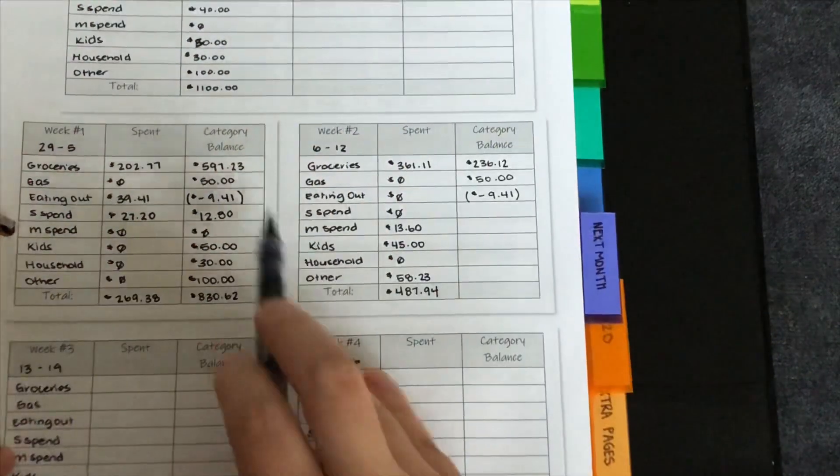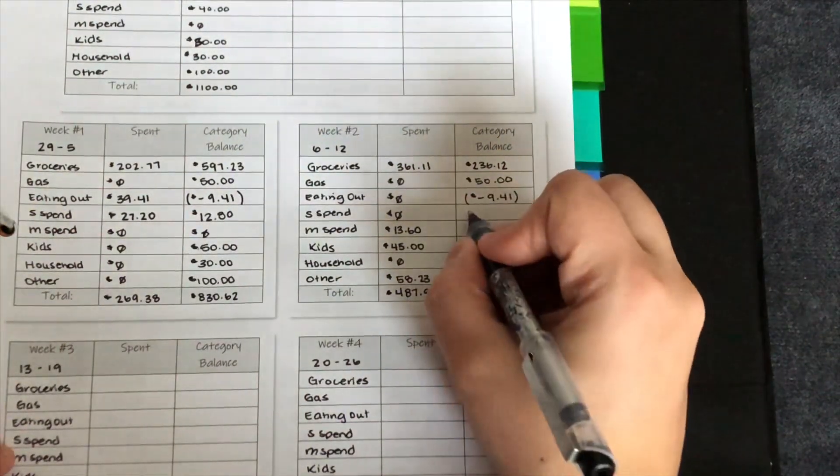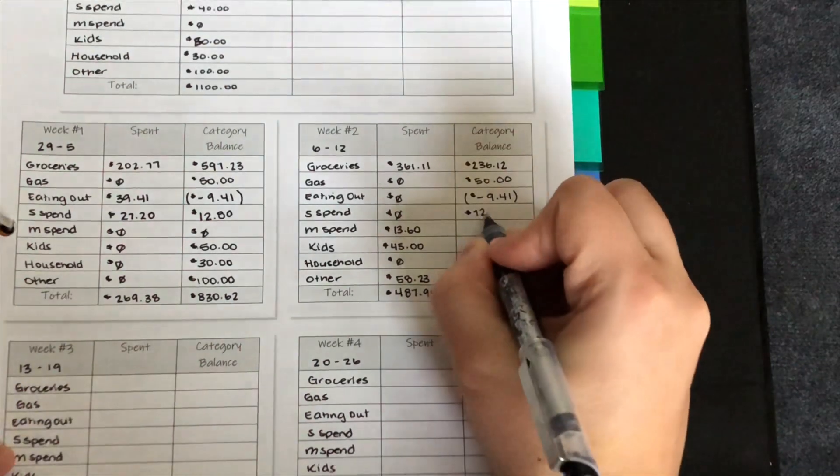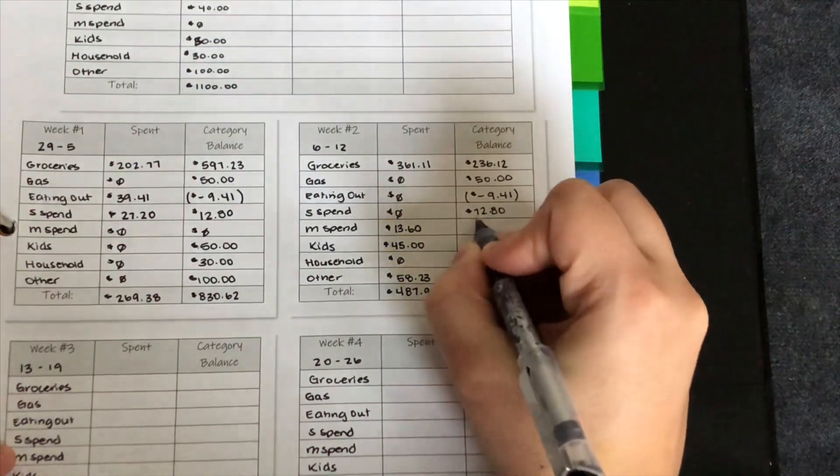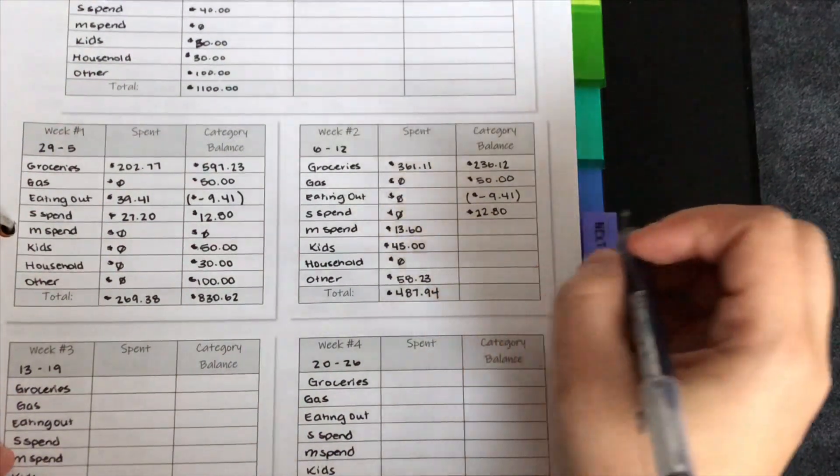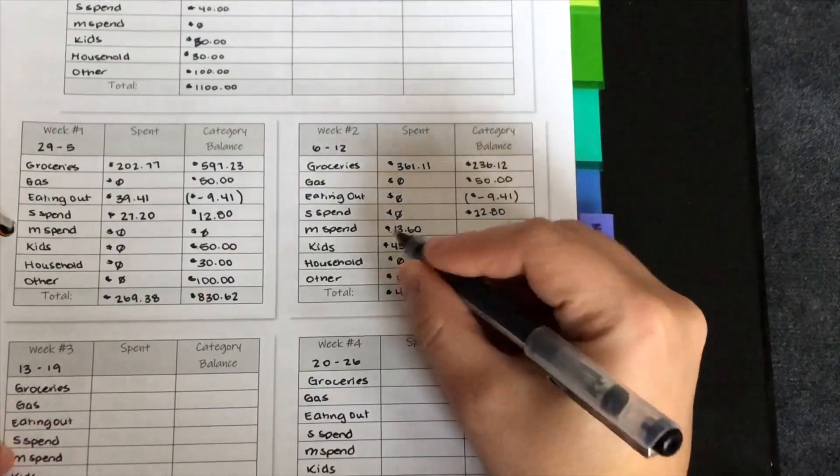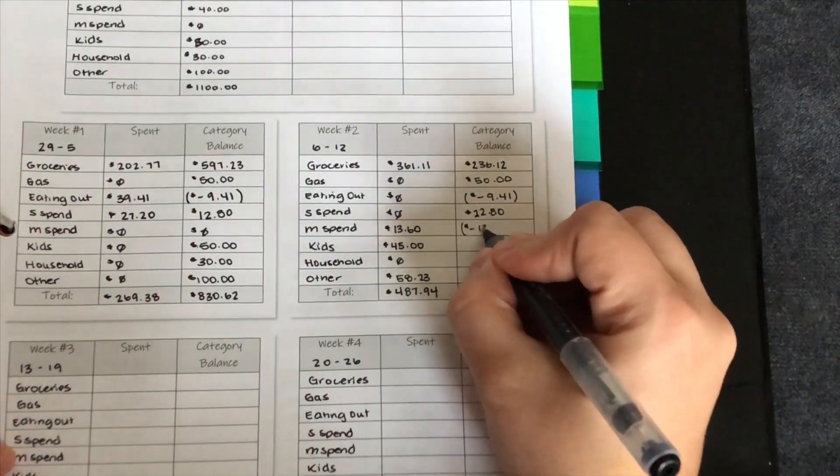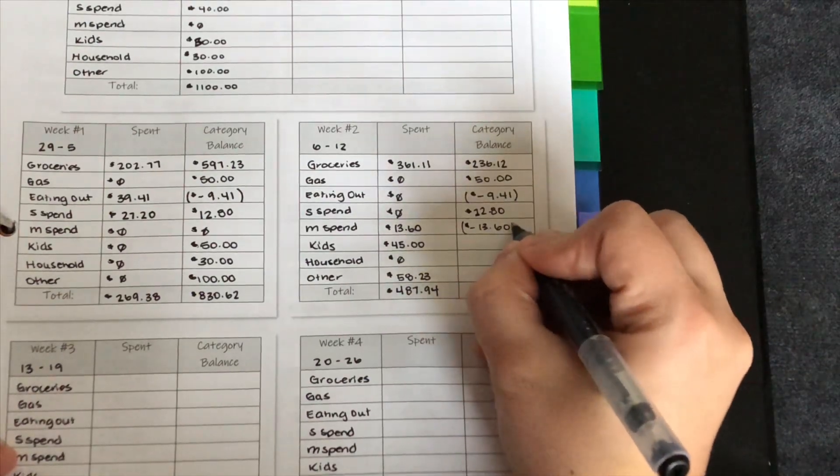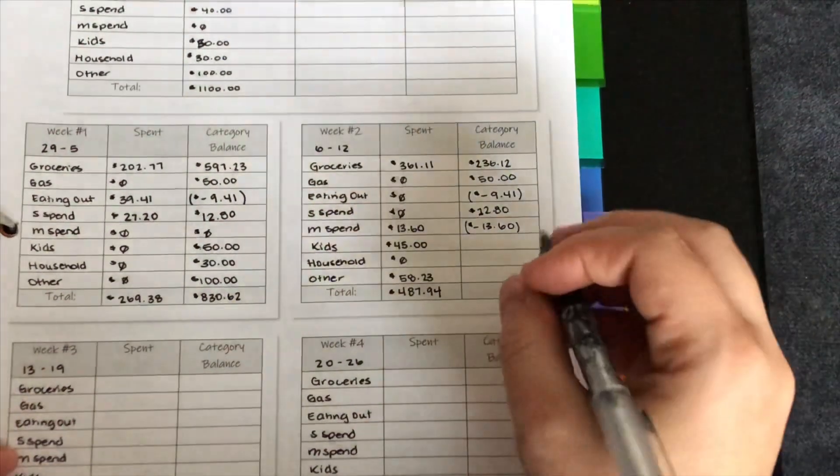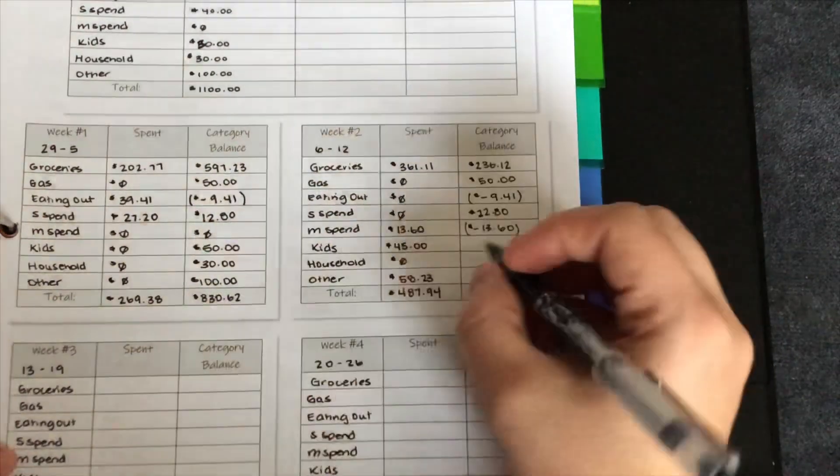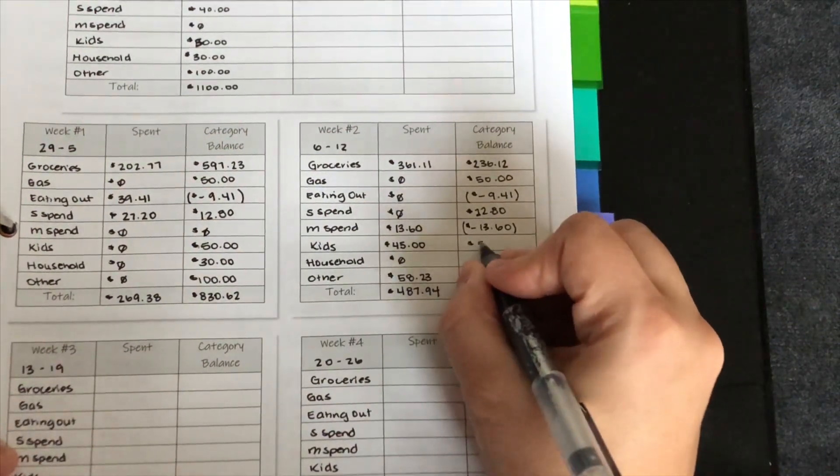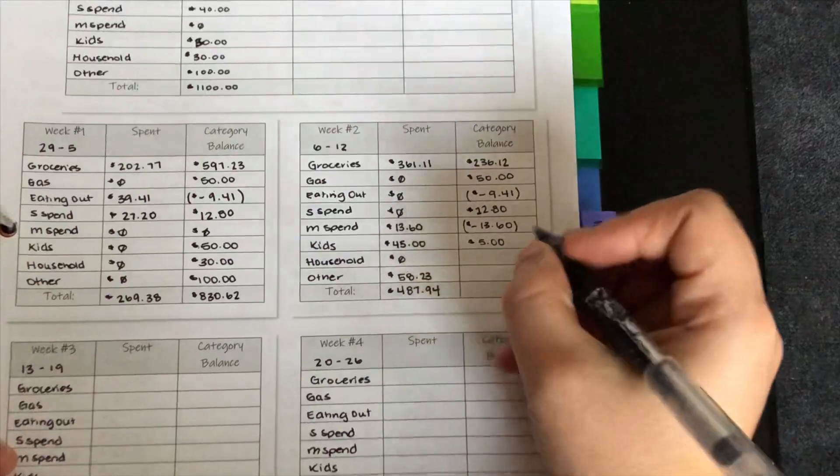My husband had $12 and 80 cents in his spending. So he still has $12 and 80 cents. That looks like a seven. So I'll just do that. Oops. I spent $13.60 and I had zero remaining. So we're just going to put that in brackets. This is how I know that we are over in that category. We spent $45 and we had 50 remaining. So we have $5 remaining for the next two weeks.